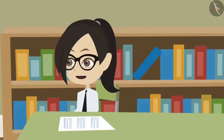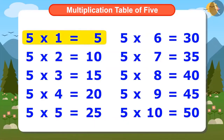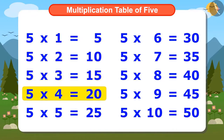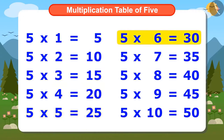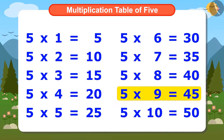Yes, I have also understood. Now I will try to memorize the multiplication table of 5 by reciting it: 5×1 is 5, 5×2 is 10, 5×3 is 15, 5×4 is 20, 5×5 is 25, 5×6 is 30, 5×7 is 35, 5×8 is 40, 5×9 is 45, 5×10 is 50.